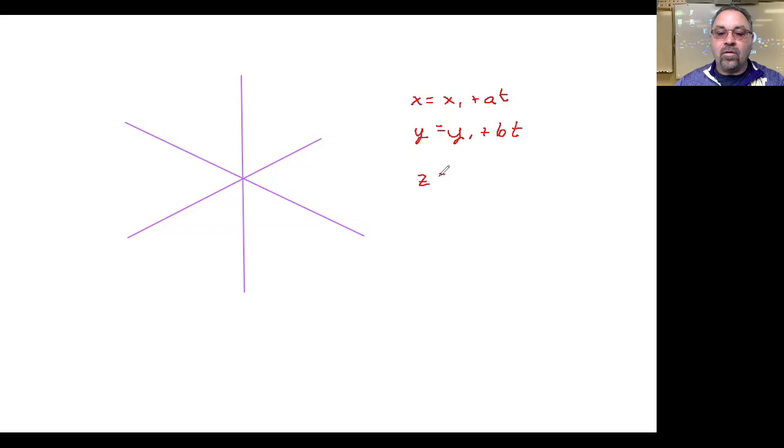But we're adding on the third variable, z equals z1 plus c times t. And so this set of parametric equations defines our line. And what I want you to notice is if you were given the point x1, y1, and z1 somewhere out here in three-dimensional space, let's say it's over here, then this a, b, c is kind of a direction that you're going to travel. You're going to go a in the x direction, b in the y direction, and c in the z direction.